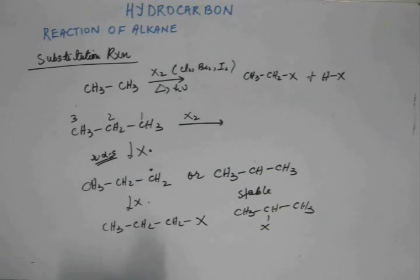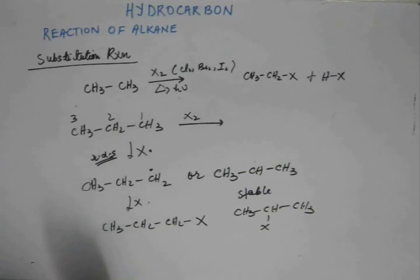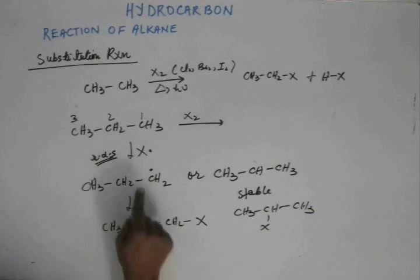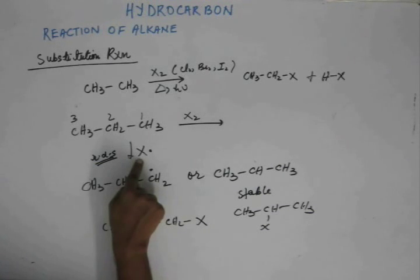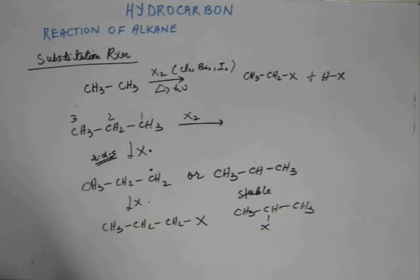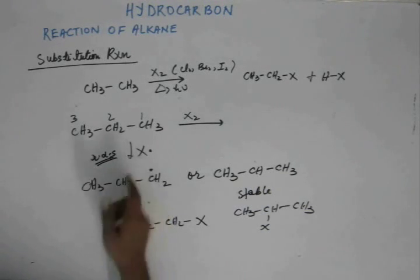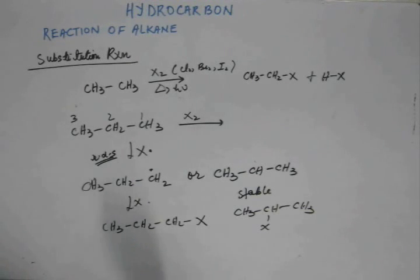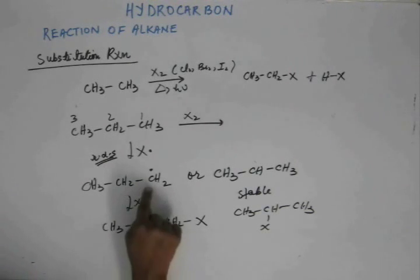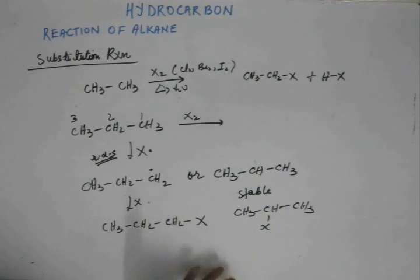Thermodynamics deals with energy and stability. If you are looking at the stable product corresponding to the stable intermediate, that analysis is the thermodynamic analysis. If the halogen free radical has enough time and can bear the electron deficiency for some time, it can cherry-pick the carbon — it can choose the most stable carbon that will form the most stable free radical and form the corresponding product. That is the thermodynamic aspect of the reaction.